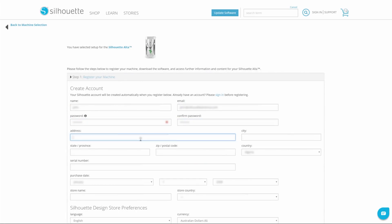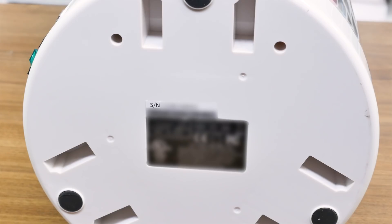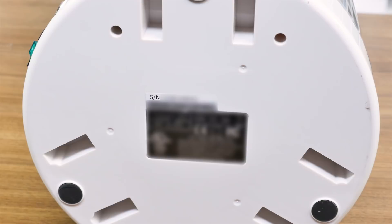Select your language and the Alta machine, then proceed to fill out all of the needed information. You will find a unique serial number on the bottom of the machine.